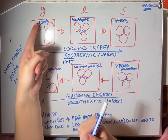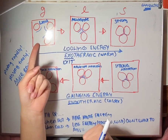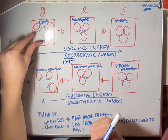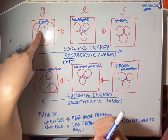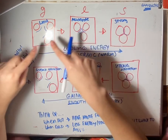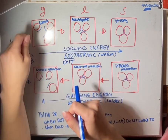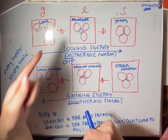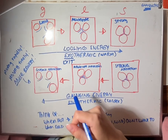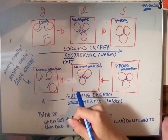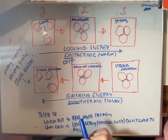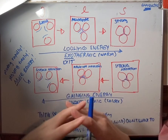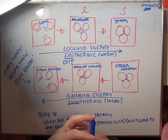For a gas, we have these particles right here. What do you notice about the particles? Their attraction is very weak. These little parentheses or curves represent the attraction between the particles. You can see that the attraction is very weak, meaning the particles are very far apart from each other — they're not close together.